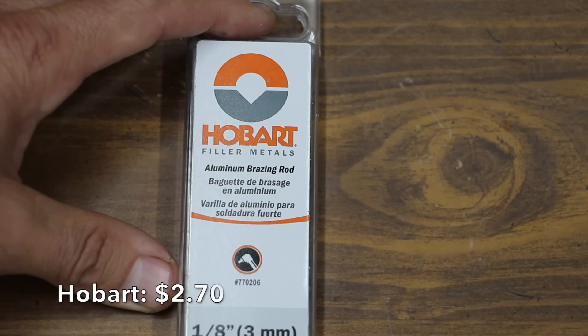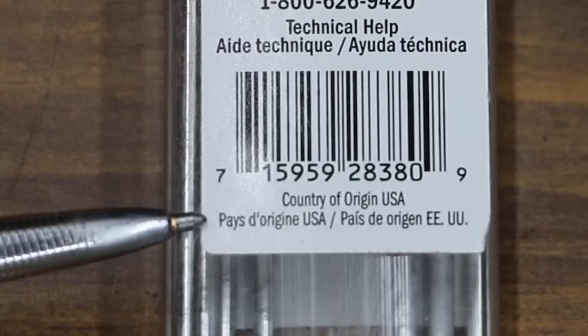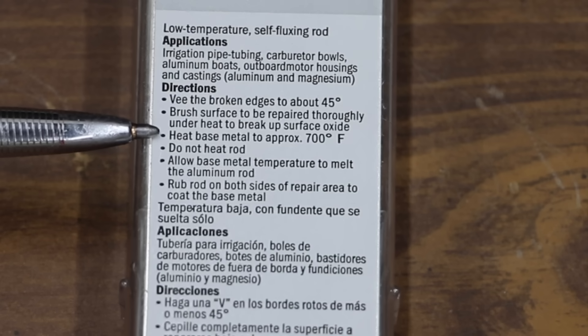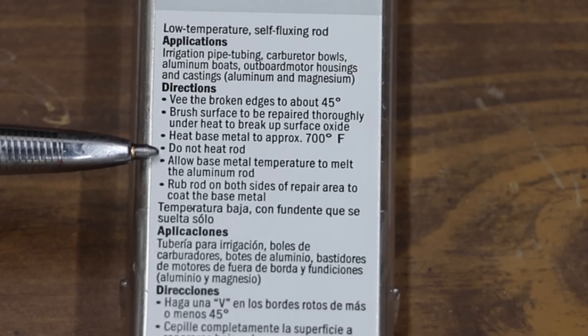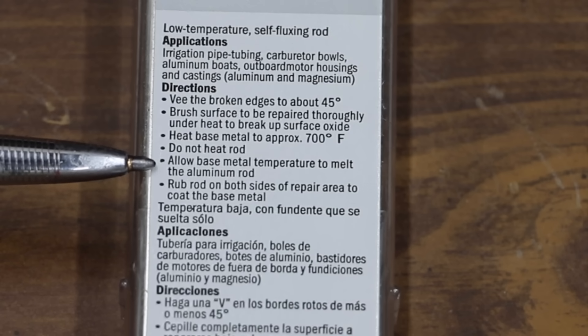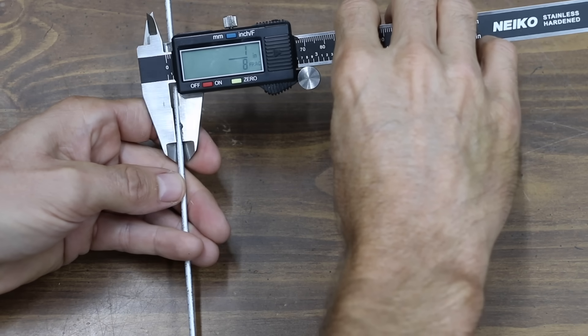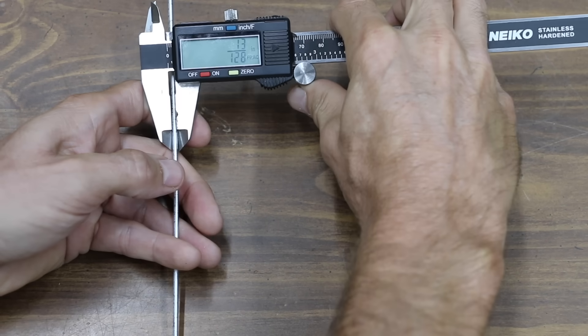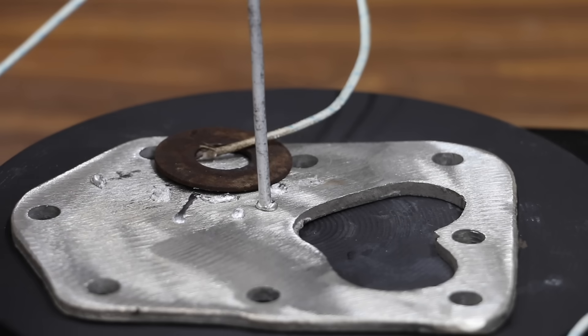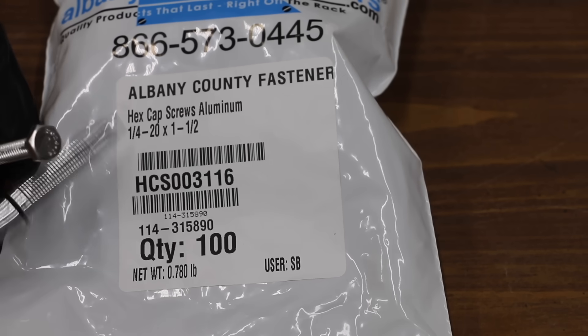And the most expensive brand we'll be testing is made by Hobart at a price of $18.90 for just seven rods, or $2.70 each. Made in USA. Heat base metal to 700 degrees Fahrenheit. Do not heat rod. Allow base metal temperature to melt the aluminum rod. Hobart welding rod is 1/8 of an inch. 13/128. 19.85 grams. The Hobart is melting at the advertised melting point.